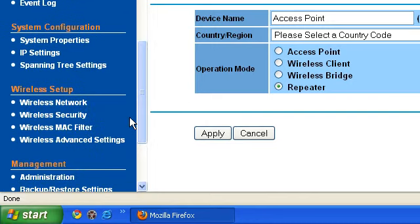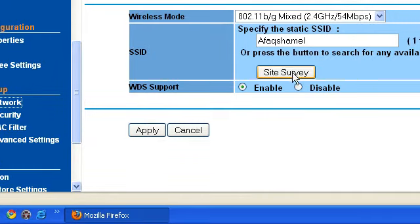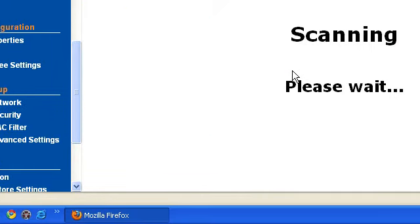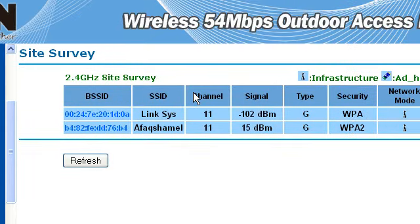After that you have to go to the wireless network and select site survey. You have to check these are the available access points and if you're going to use this as your repeater, you have to check your settings. The access point should be set to the security of WPA.